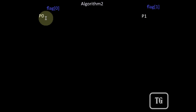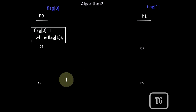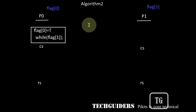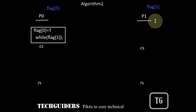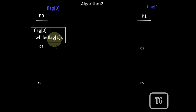If P0 is interested to enter the critical section, before entering it will set its flag to true — flag[0] will be true. But before entering the critical section, it will also check the other flag, flag[1]. If flag[1] is true, then P0 will never enter the critical section; it will keep on waiting in the while loop checking the value of flag[1].